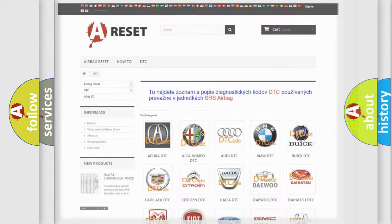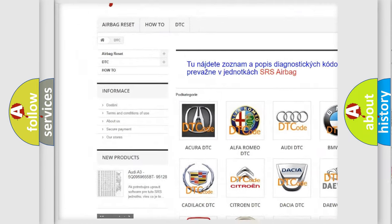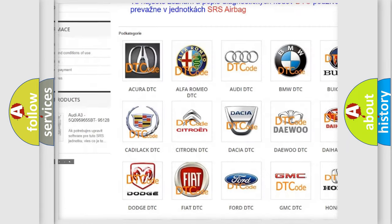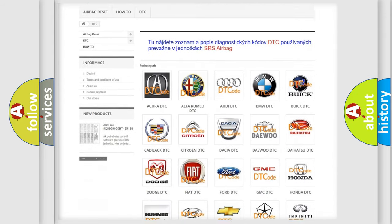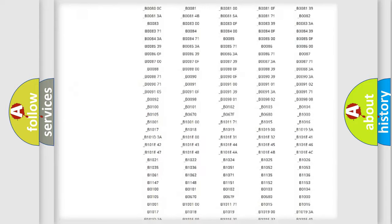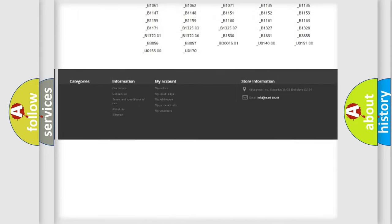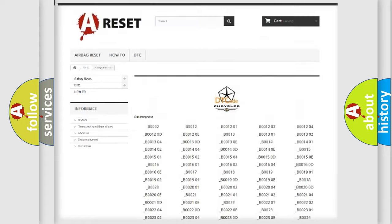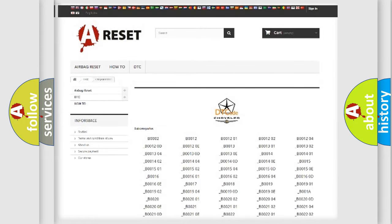Our website airbagreset.sk produces useful videos for you. You do not have to go through the OBD2 protocol anymore to know how to troubleshoot any car breakdown. You will find all the diagnostic codes that can be diagnosed in Chrysler vehicles, and also many other useful things.